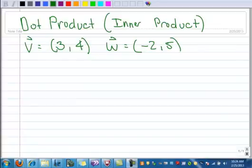Alright, this example is on the dot product. Product is multiplication, and sometimes the dot product is called the inner product.